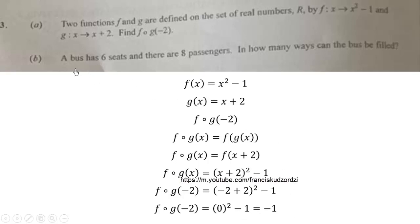On the b part, a bus has six seats and there are eight passengers. In how many ways can the bus be filled?